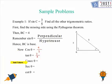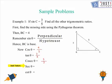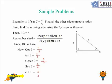Cosec theta is the reciprocal of sine theta, so it is 5 over 3. For sec theta, it is the reciprocal of cos theta, so that is 5 over 4. And for cot theta, it is the reciprocal of tan theta, so cot theta equals 4 over 3. So these are all the trigonometric ratios that we were supposed to find, and this is the solution to the problem.